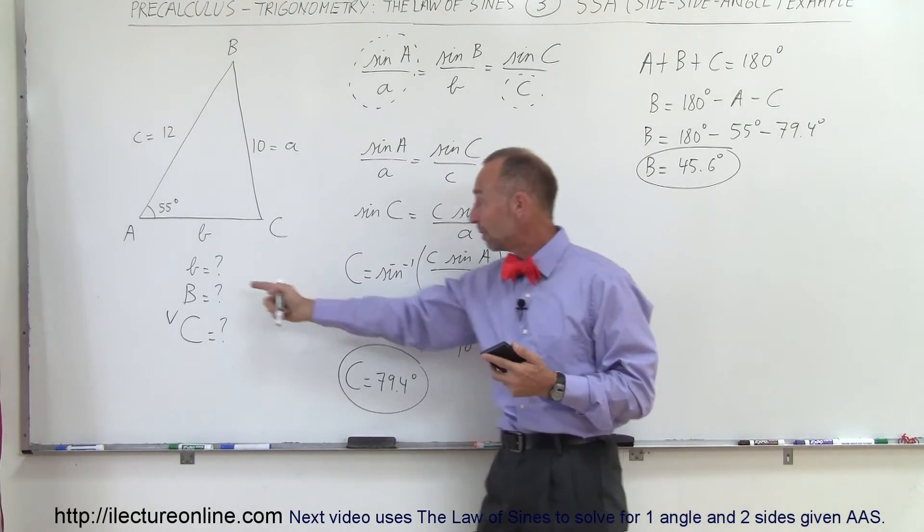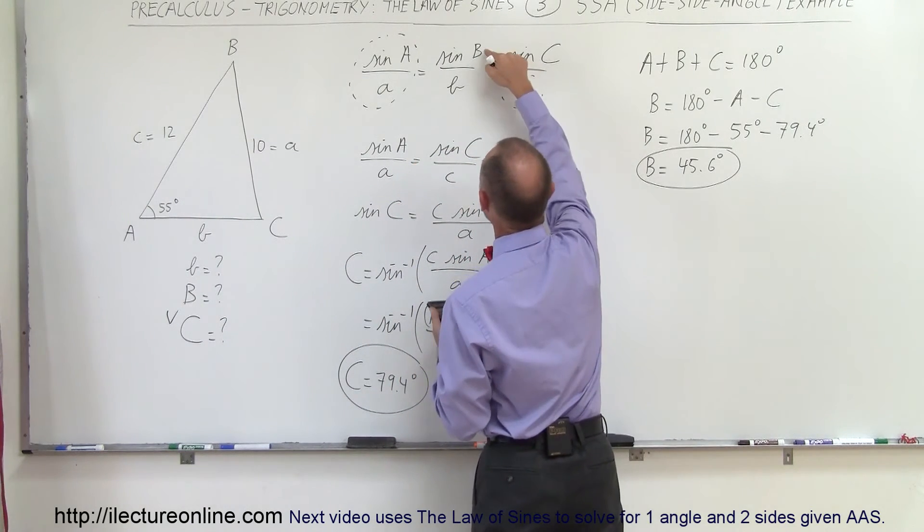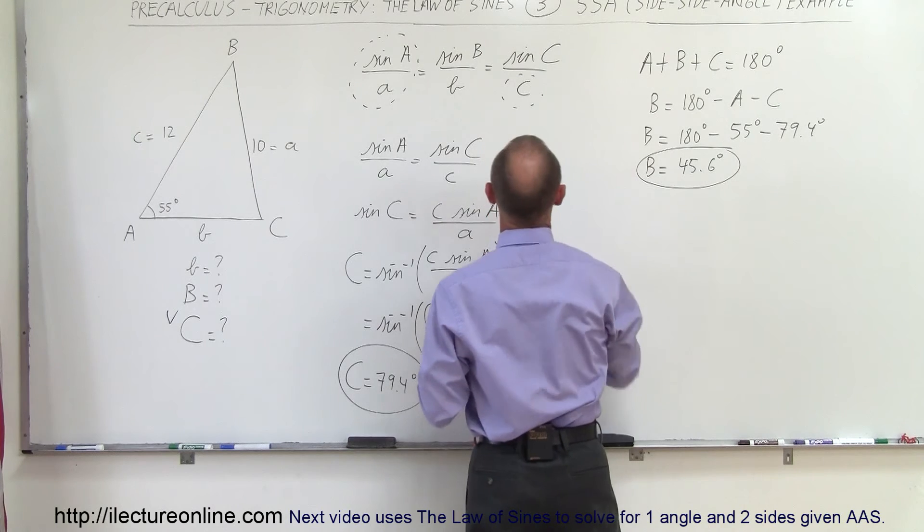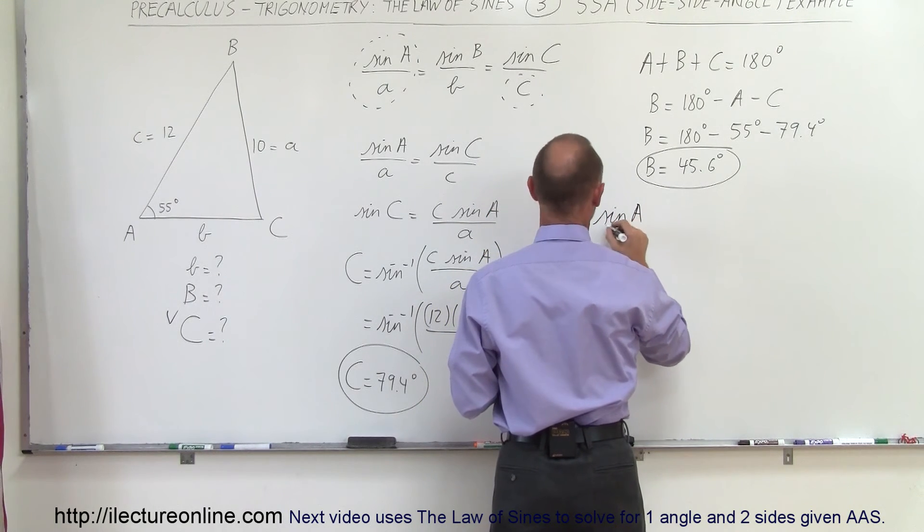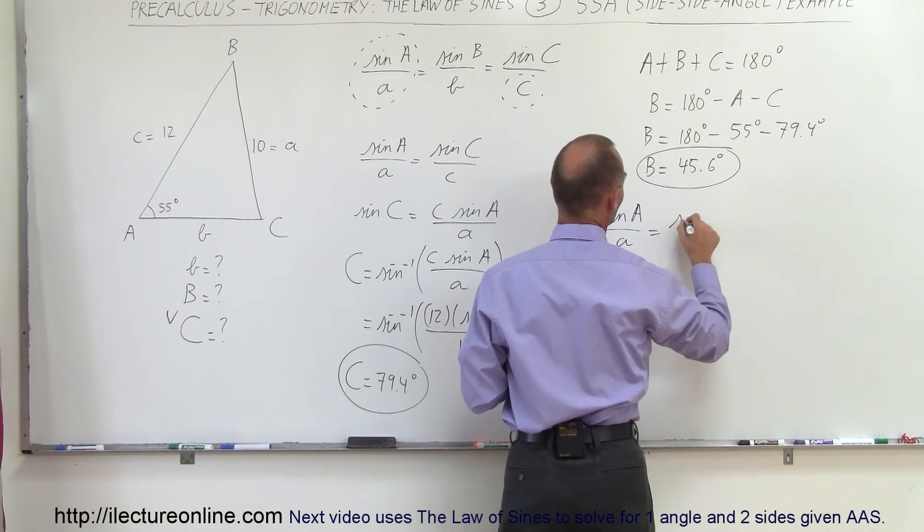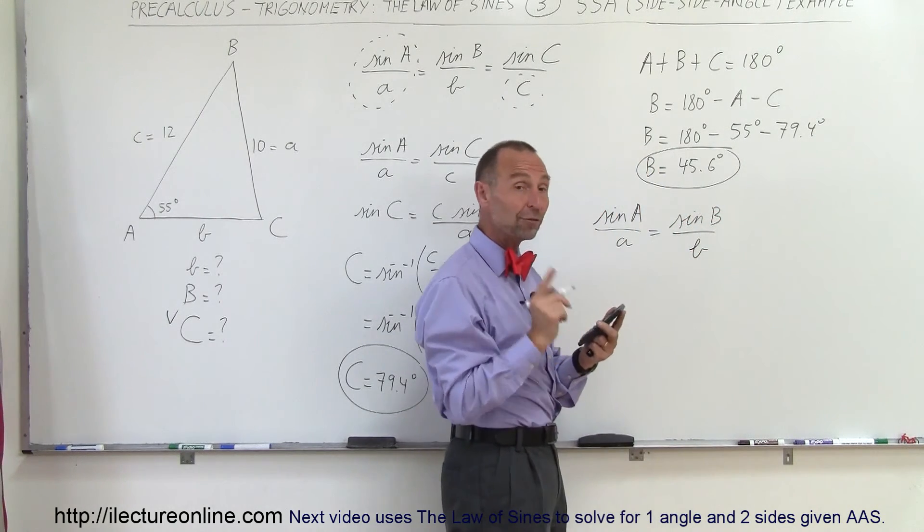The only thing left to be found was side B, and so then since now we know angle B, we can take this equation here and write sine of A divided by side A equals sine of B divided by side B, and then solve that equation for side B.